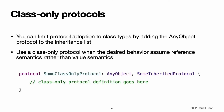Class-only protocols. You can limit protocol adoption to class types and not structures or enumerations by adding the any-object protocol to a protocol's inheritance list. In this example, some-class-only protocol can only be adopted by class types. It is a compile-time error to write a structure or enumeration definition that tries to adopt some-class-only protocol. Note: use a class-only protocol when the behavior defined by that protocol's requirements assumes or requires that a conforming type has reference semantics rather than value semantics.